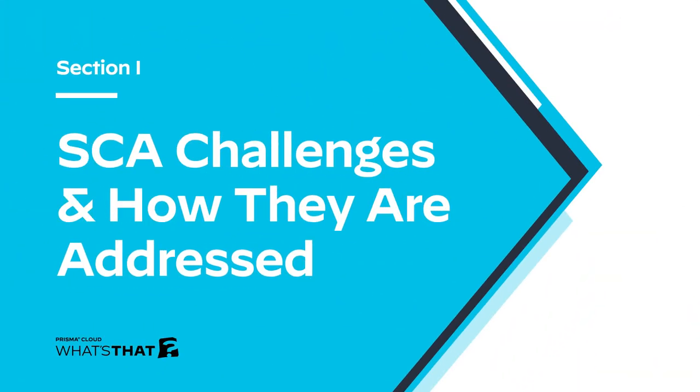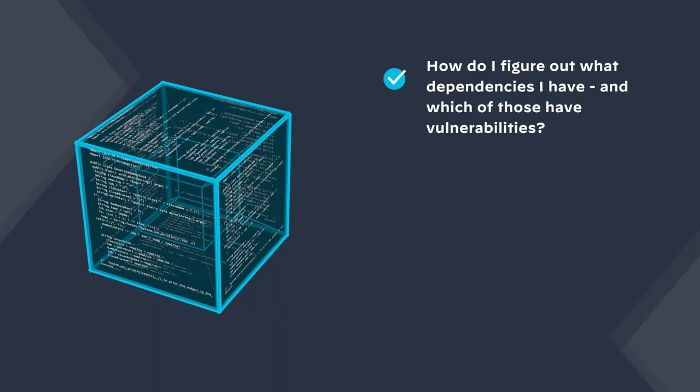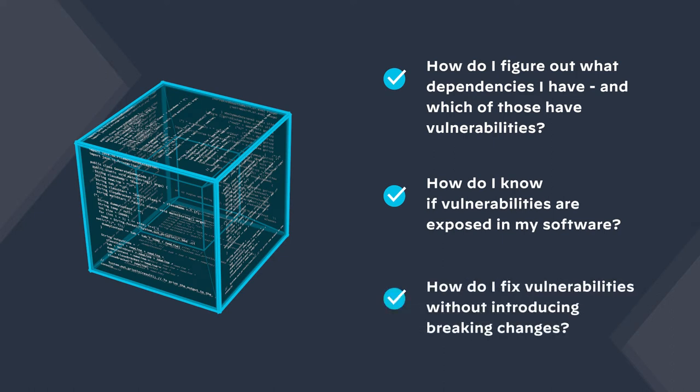We'll discuss the details of SCA execution, starting from the challenges that it aims to address. The major challenges associated with SCA can be boiled down to three questions. One: how do I figure out what dependencies I have and which of those have vulnerabilities? Two: how do I know if vulnerabilities are exposed in my software? And three: how do I fix vulnerabilities without introducing breaking changes?